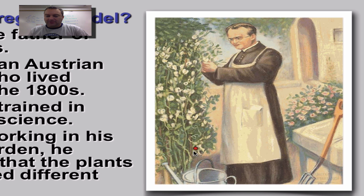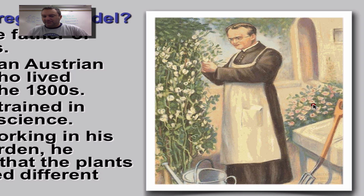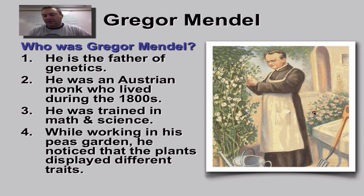He noticed that some of his pea plants grow really, really tall, but some of them are short. Some of them have white flowers, but others are purple. Some of the flowers are in the middle of the stem, and some of them are at the end of the stem. So he wondered why this happens, and he ran a few experiments to figure it out — and this is where we get his discovery of genetics.